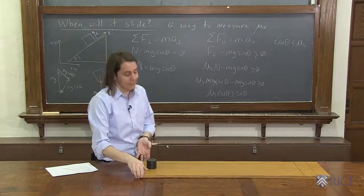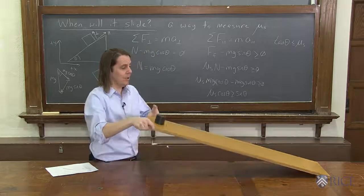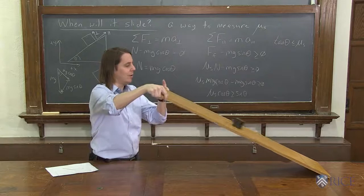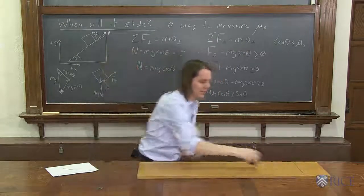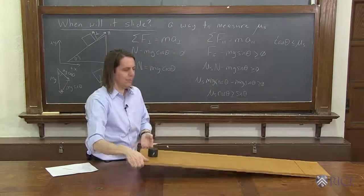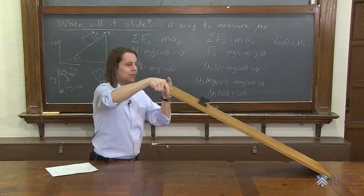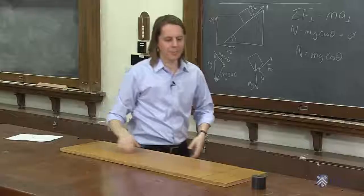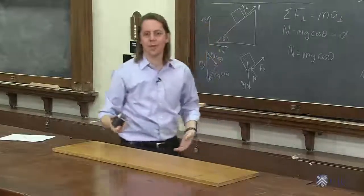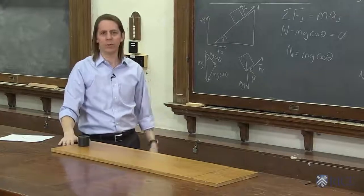We should get the same thing every time, right? If the friction is the same every time, right about there. Let's do it again. Right about there. Every time, because the friction is the same every time. So that's the easiest way to measure mu s. I'm sure we could think of harder ways.